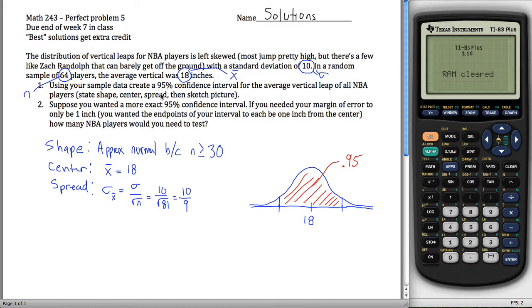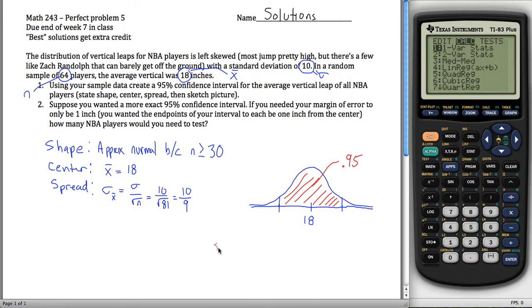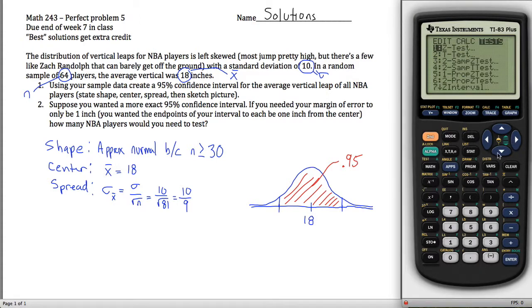So there's a few different ways you could do this. We could do this using old methods and figure out these exact values, but your calculator also does it for you. If you hit stat here, if you go to tests and then you go down to z interval, the seventh thing here, it'll make a confidence interval for you.